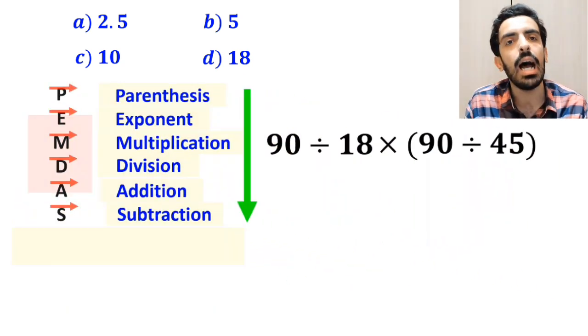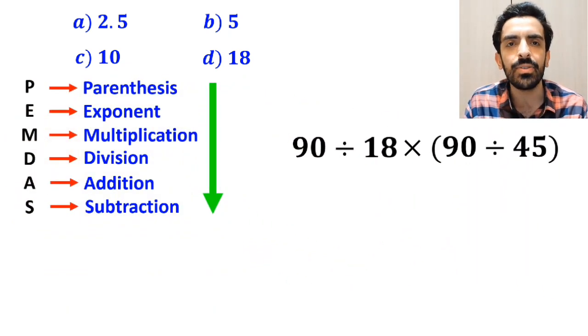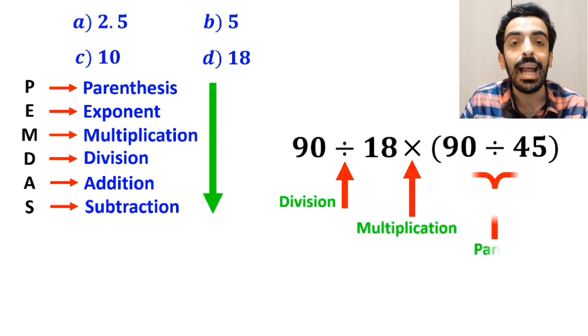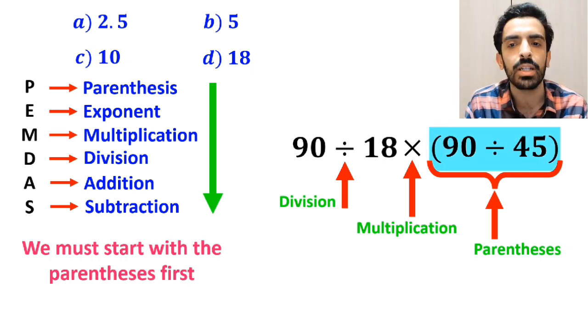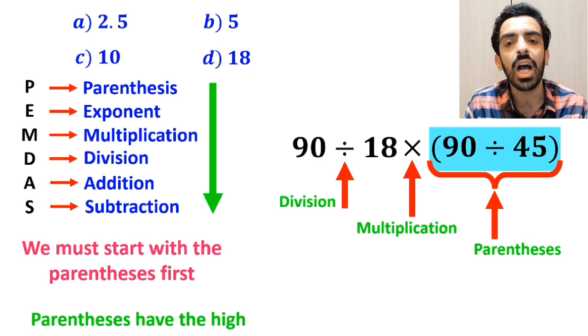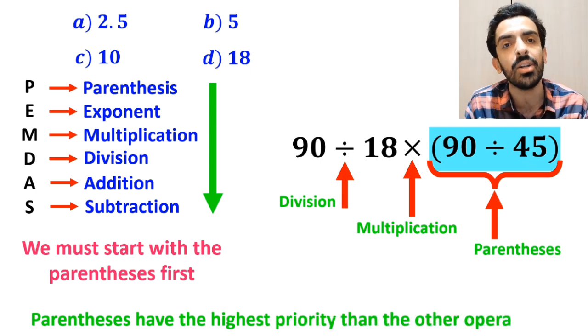As you can see on the screen, in this expression first we have a division sign, then a multiplication sign, and finally parenthesis. According to the PEMDAS rule we must start with the parenthesis first because parenthesis have the highest priority compared to the other operations.